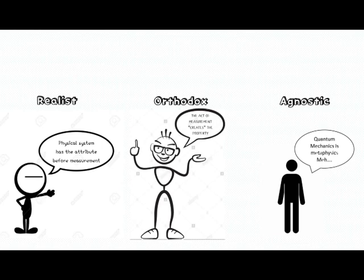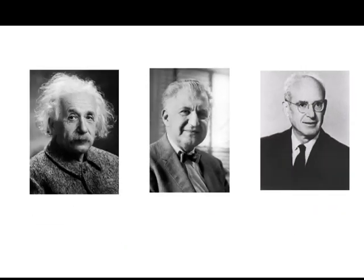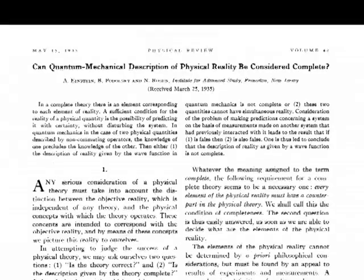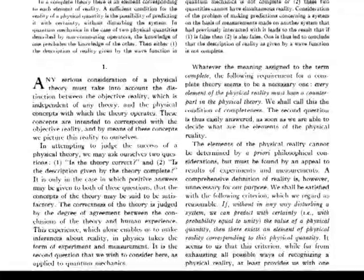The realists believe that quantum mechanics is still an incomplete theory. Even if you know about all quantum mechanics has to tell you about the system, you still could not determine all its features. In 1935, Einstein, Podolsky, and Rosen published the EPR Paradox, a thought experiment to prove that the realist position was the only sustainable one.